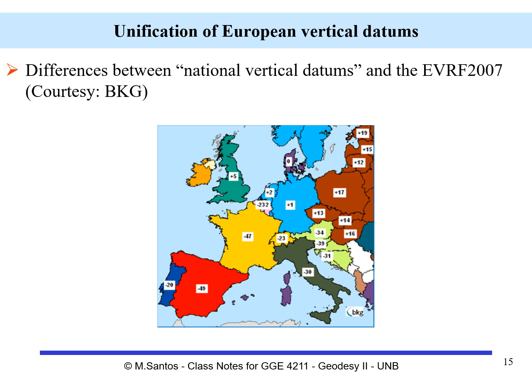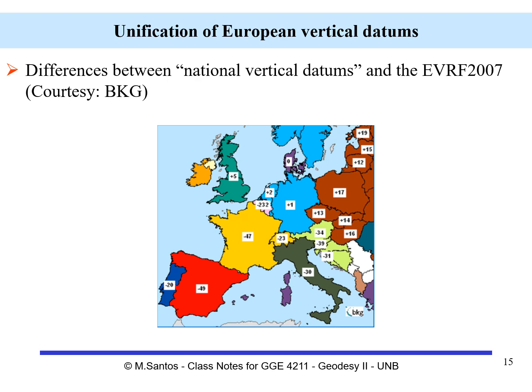After applying these offsets, all heights would be consistent with the EVRF 2007. As a take-home message, we can say that we can have access to orthometric heights either from a tidal datum or from a gravimetric datum. Both systems have advantages and disadvantages — a tidal datum depends on the sea surface topography, whereas a gravimetric datum depends on the adopted value of W0. And a global height system can only be realized by a gravimetric datum.